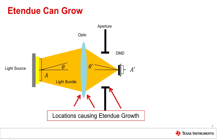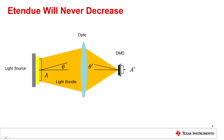In practice, etendu does grow due to unintentional or intentional diffusion, scattering, aberrations, and diffraction off of surfaces and through apertures. This is an unavoidable consequence of the use of imperfect elements and the second law of thermodynamics. But etendu will never decrease.